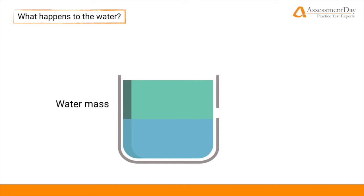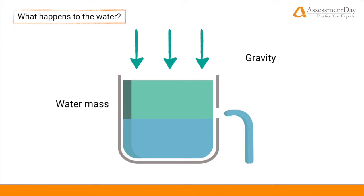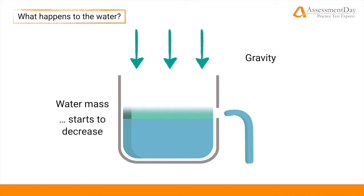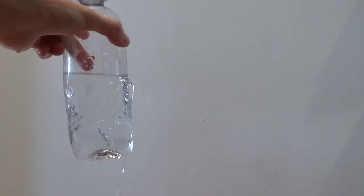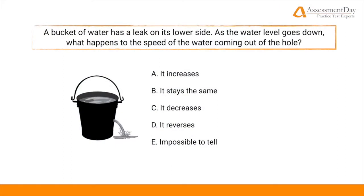Here we have a graphic of the bucket with the hole filled with water. Gravity is acting and allowing the mass of the water to push it down and through the hole, getting weaker and weaker until the head of the water has passed the hole. So, returning to our question, the bucket of water has a leak on its lower side. As the water level goes down, the speed of the water decreases as it comes out of the hole.